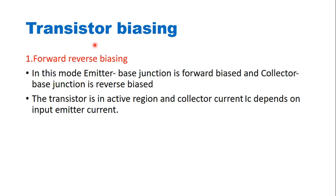Next is transistor biasing. Biasing means the process of applying a voltage to the transistor. There are mainly three types of biasing: active mode, saturation mode, and cutoff mode. In active mode — the normal mode of operation — the emitter-base junction is forward biased and the collector-base junction is reverse biased. The transistor operates in the active region, and the collector current Ic depends on the input emitter current Ie. This mode is used in amplification.